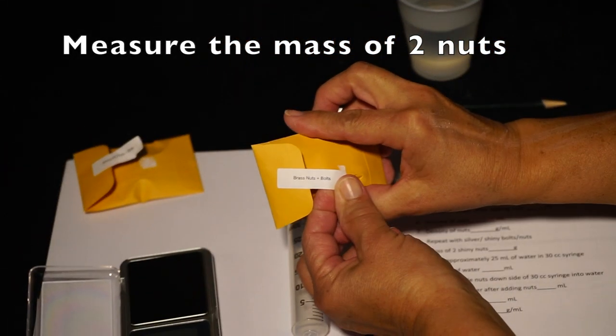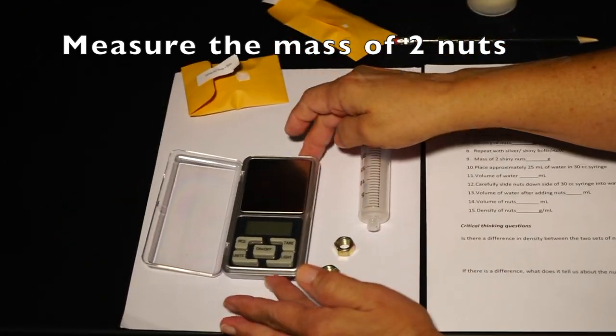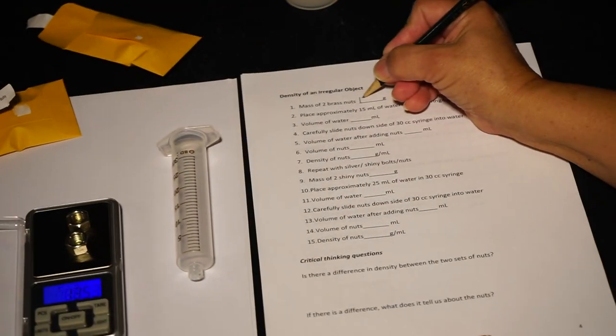Density of an irregular object: First measure the mass of two of the nuts by using your balance. Record this in your data table.